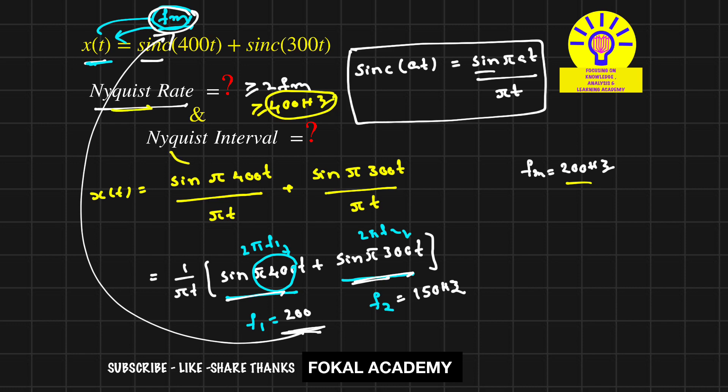Now what is the Nyquist interval? It's the inverse of the Nyquist rate, equal to 1/(2fm) = 1/400. The units are seconds, so the Nyquist interval is 1/400 seconds and the Nyquist rate is 400 Hz.